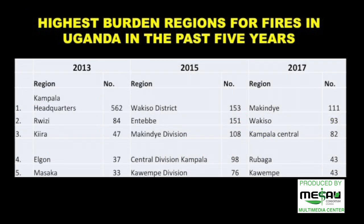Here we see the regions with the highest burden of fires reported over time for 2013, 2015, and 2017. The regions that stand out in all three years are Kampala District, Kawempe Division, and Makindye Division, which seem to constantly have high reports of fires.